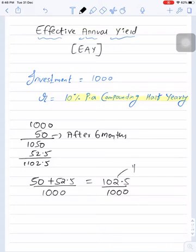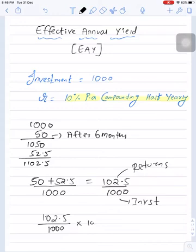So this is your returns and this is your investment. Now when you compute ROI, that is return on investment, you will get answer as 10.25%. So 10% compounding half yearly is equal to 10.25% compounding annually. So effectively we have generated 10.25% because of compounding frequency.